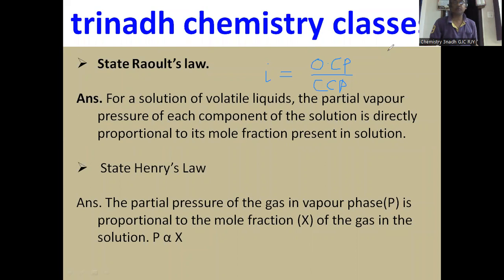We also need to learn about relative lowering of vapor pressure. It is the ratio between the lowering of vapor pressure to the vapor pressure of the pure solvent, denoted as RLVP, which equals (P₀ - P) / P₀. This is called relative lowering of vapor pressure. These are some important questions from the Solutions topic.